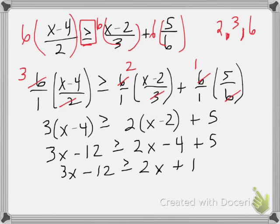I'm going to combine any like terms on each side that I can. And so, at this point, I have this linear inequality. So, how can I go about solving it? Well, I want to subtract 2x from each side, and I want to add 12 to both sides. That gives me x greater than or equal to 13.